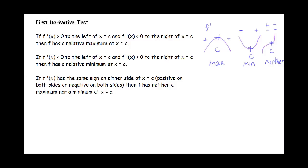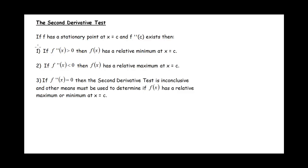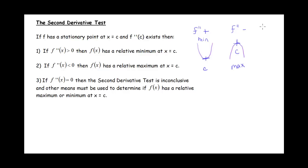Now let's look at the second derivative test. We have a stationary point for f at x equals C where the slope is zero. If our second derivative is positive, then our graph is concave up and this must be a min. If our second derivative is negative, then our graph is concave down and this must be a max. Sometimes the second derivative is zero, which might mean a min, a max, or an inflection point — we just can't tell from the second derivative test alone.